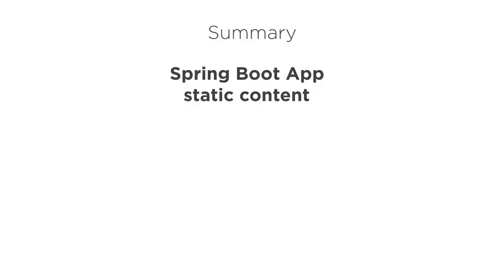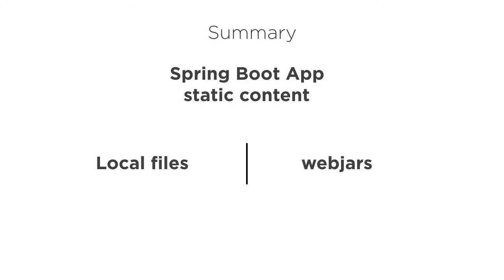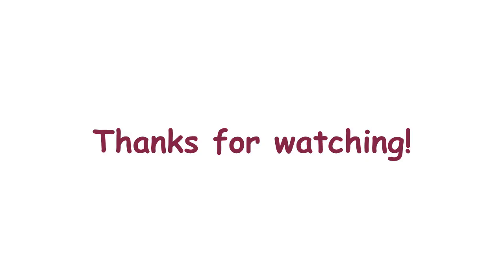In this video, we saw how in our Spring Boot project we can refer to static content like JavaScript and CSS files. We saw all three methods: referencing local files, using Maven to download these files via WebJars and then referring to them, and finally using CDNs. Thanks for watching — we'll see you next time.